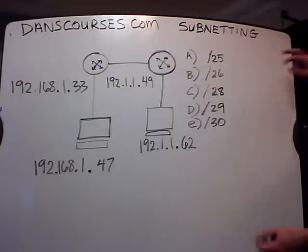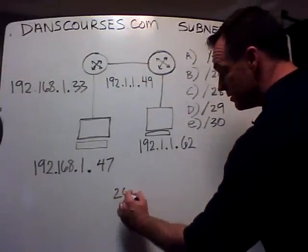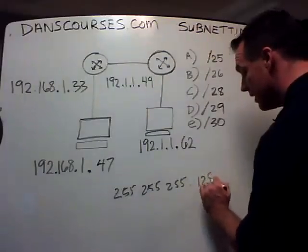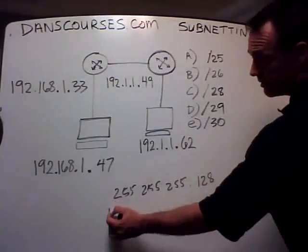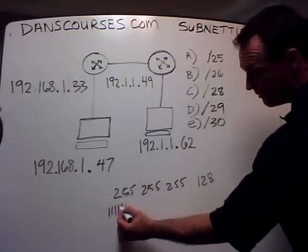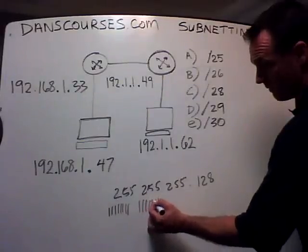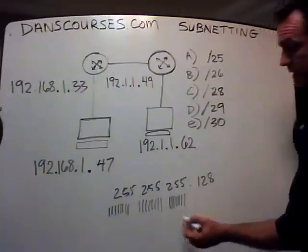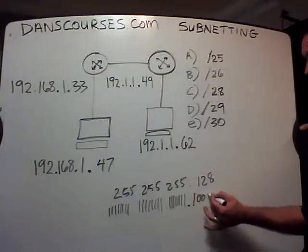The first one we're going to examine is a slash 25. A slash 25 subnet mask is the same as 255.255.255.128. How do I know that? Because this is eight ones — one through eight — and eight ones. There are 24 ones, and then a 25th one, and then seven zeros.